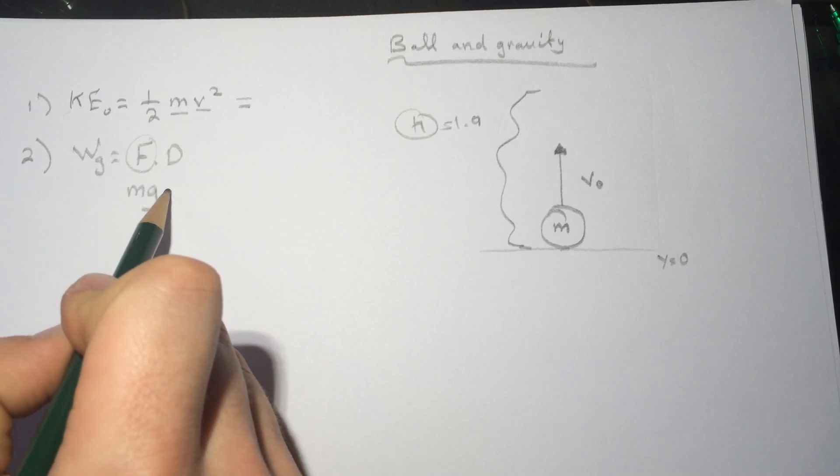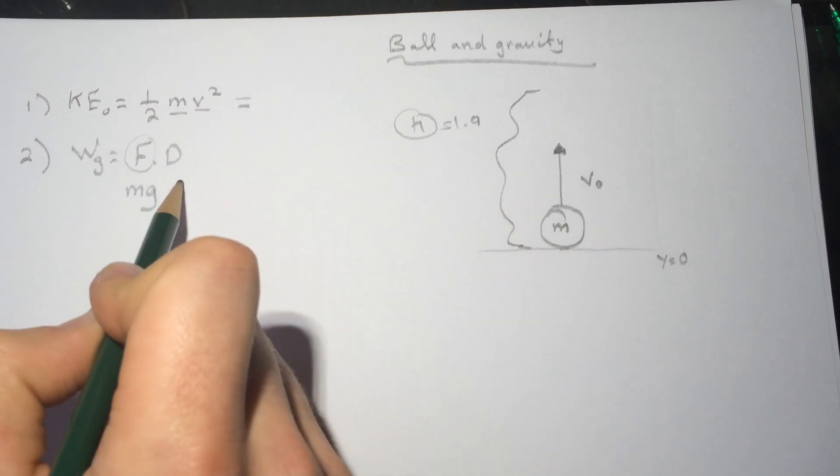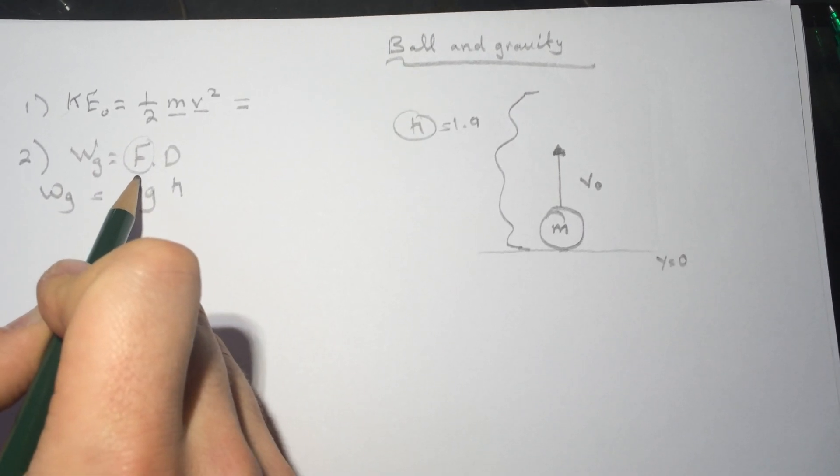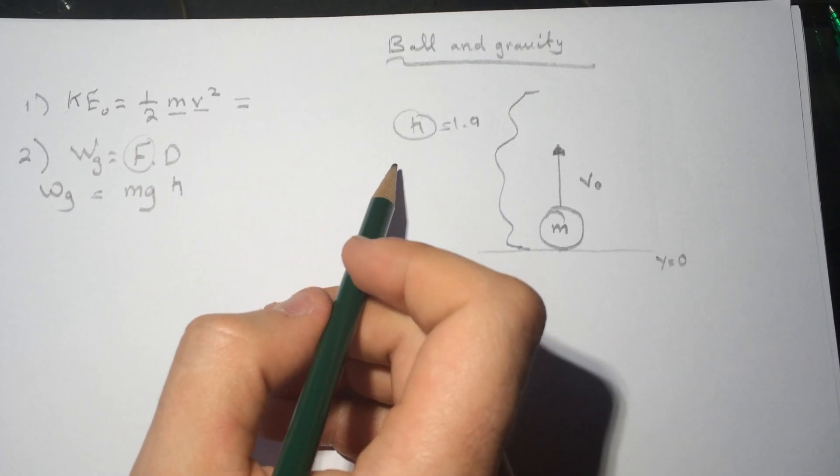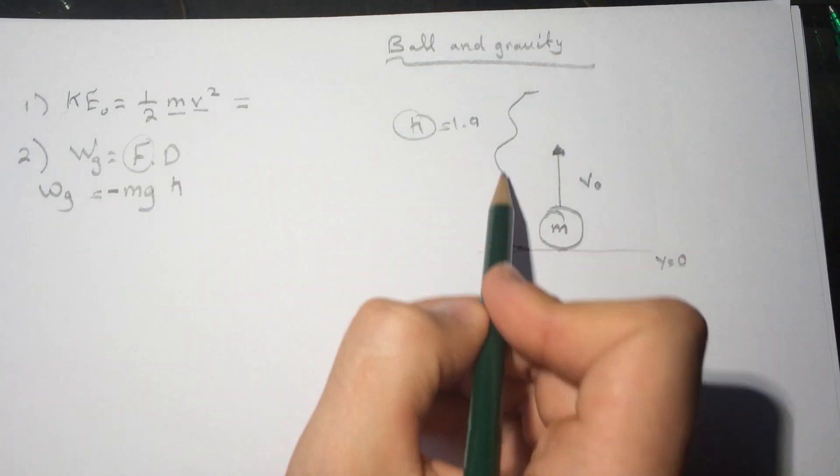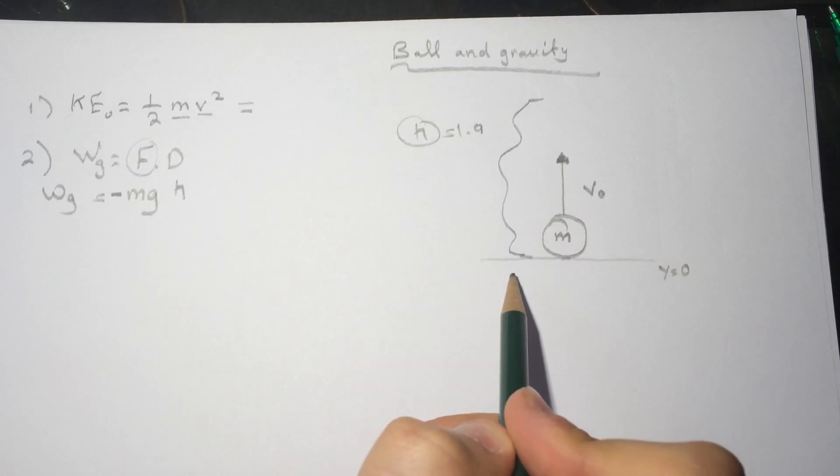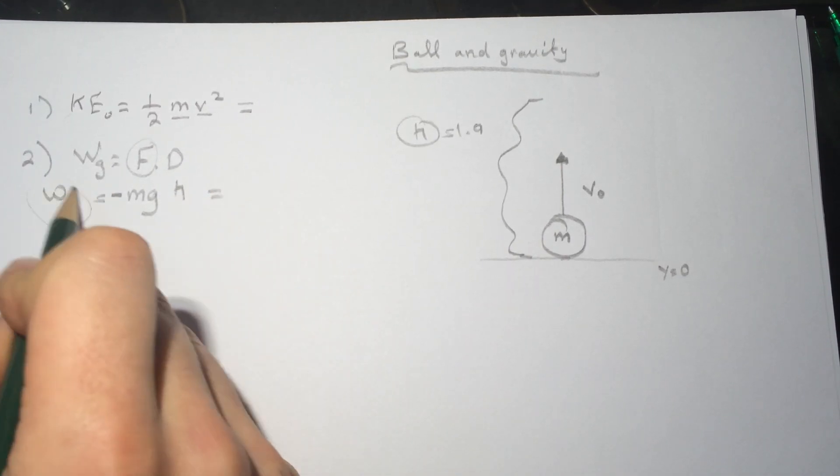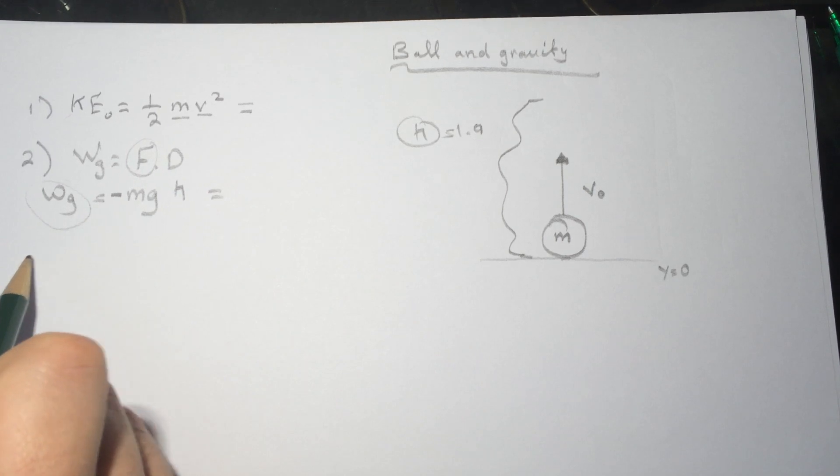it's mg times the distance, which is h in this case, so it's mgh work done by gravity. And it's going to be negative because we're taking the ball in the opposite way of the force. That's why it's negative here. So we'll get the value for the work done by gravity.